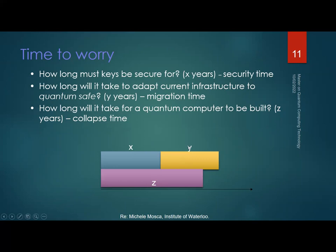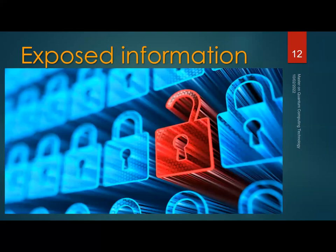You also have to consider how long it will take for quantum computers to be built — that's z, the collapse time. If x plus y is greater than z, then you have to worry. It's simple, but it really puts in perspective the timescales you need to consider.